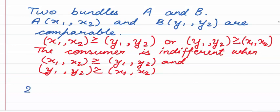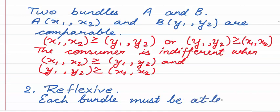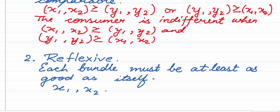Looking at the second assumption, reflexive: what we actually mean by reflexive is that each bundle must be at least as good as itself. The bundle (X1, X2) must be weakly preferred over the bundle (X1, X2). The weekly preference should be reliable when comparing a bundle with itself. So this is the case of reflexive.